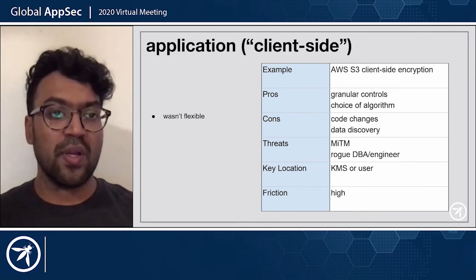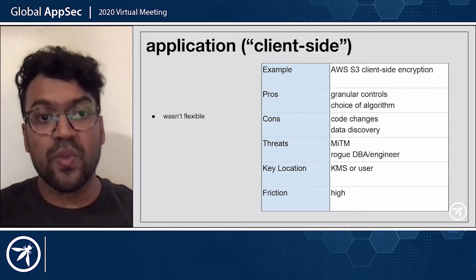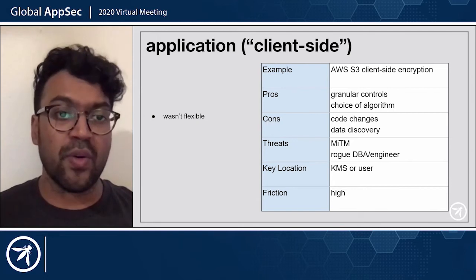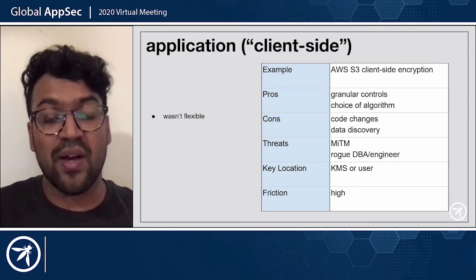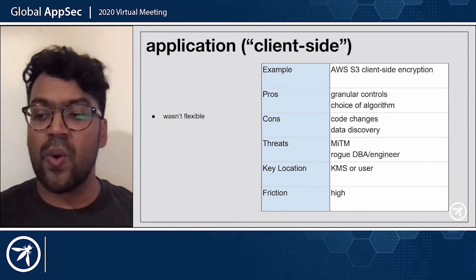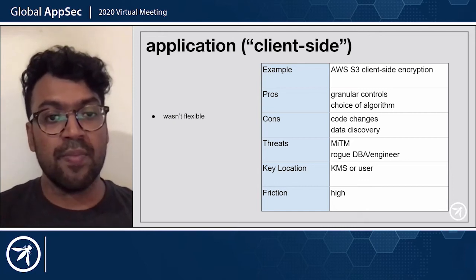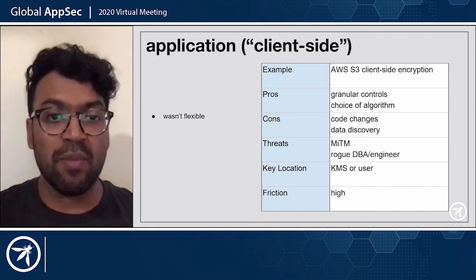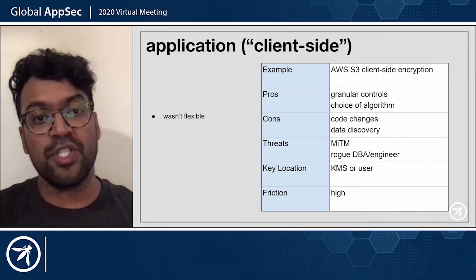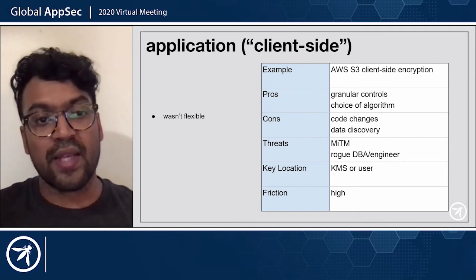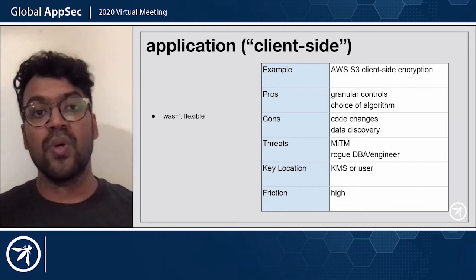Which leads us to the last option we considered — client-side encryption. Examples include Google Tink or AWS S3 client-side encryption. With this one, we can choose our algorithm, we can choose the key material, we can choose the controls we wanted to use. But with that flexibility came cons — we had to make a lot of code changes, and we had to discover where sensitive data lives. The good thing is that now we're protecting against man-in-the-middle threats and rogue engineers. The keys can come from a legitimate KMS or we can supply them as a user. Ultimately, we chose this option — we chose to use the client-side option — and in so doing, we wanted to build our own solution.